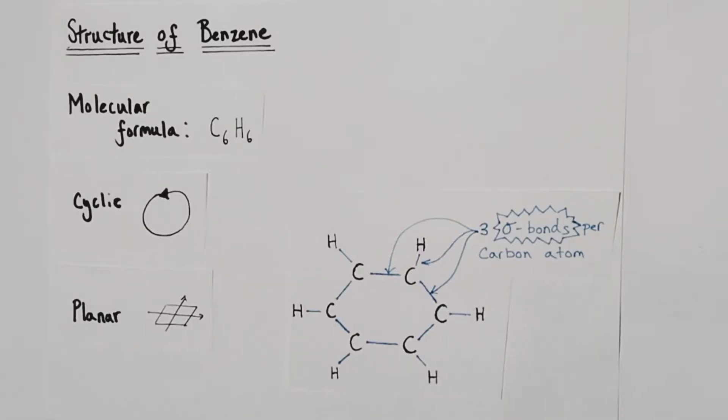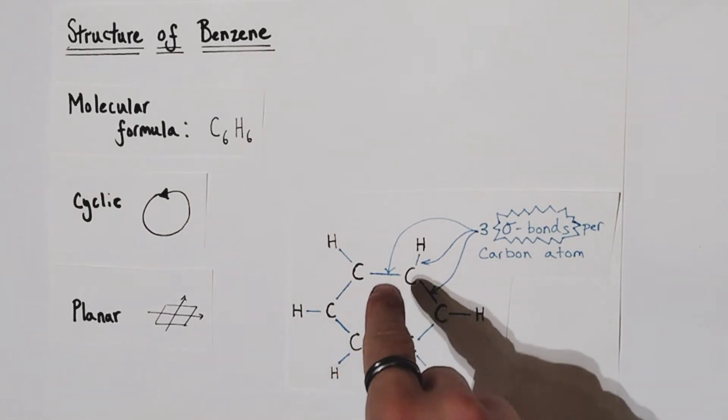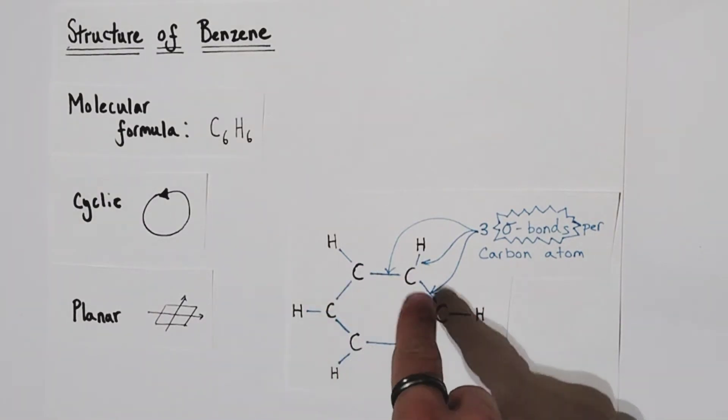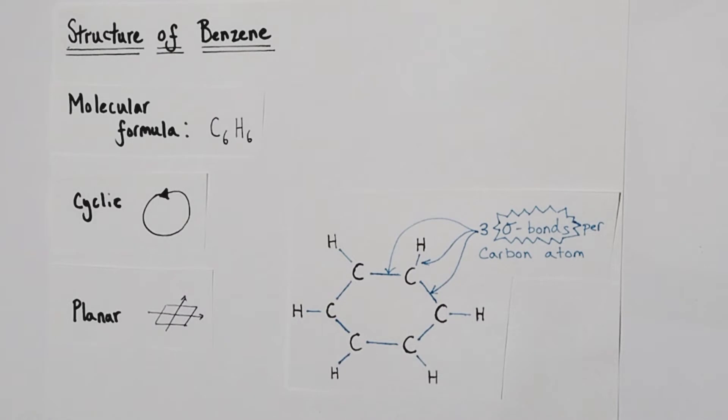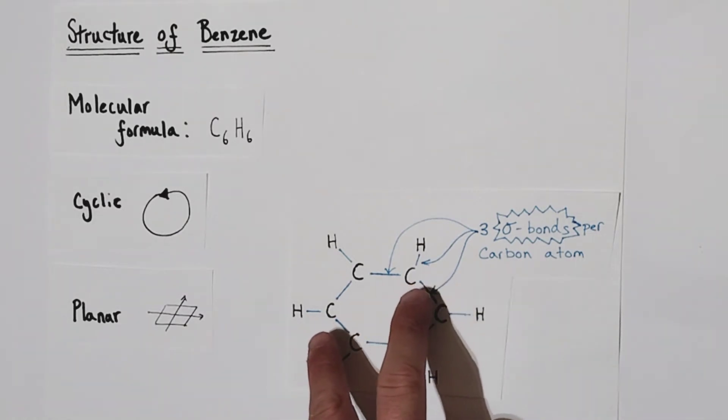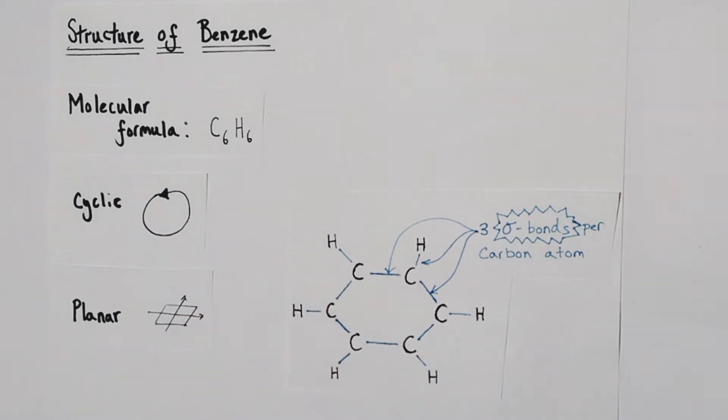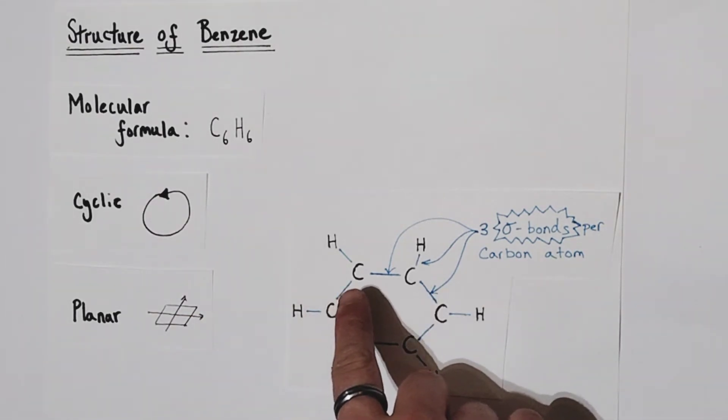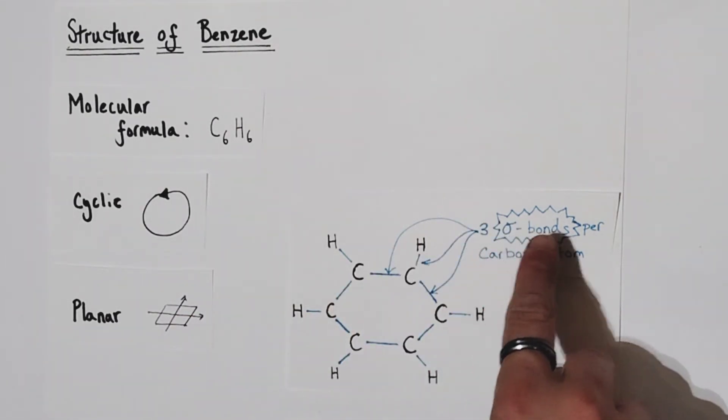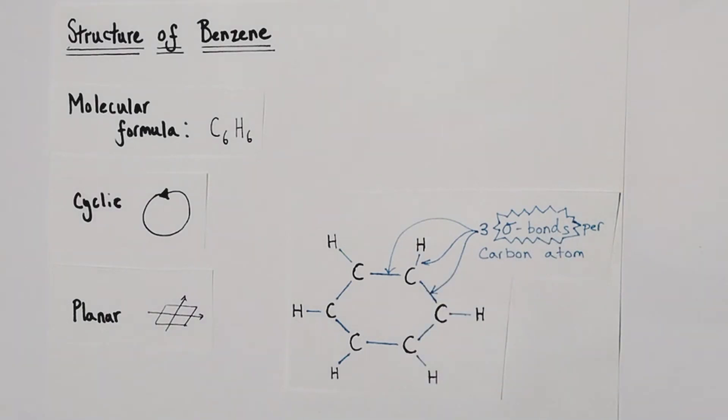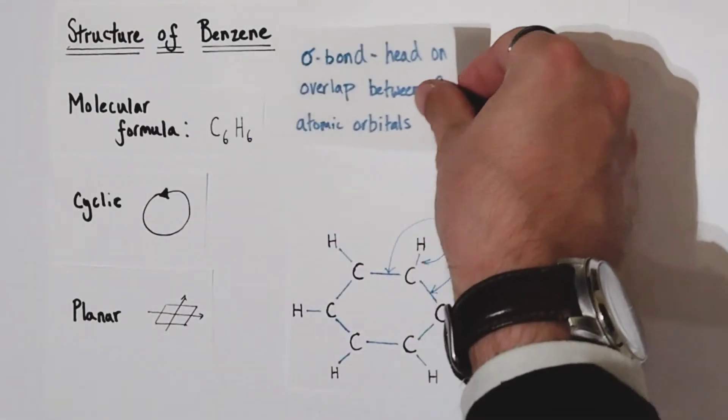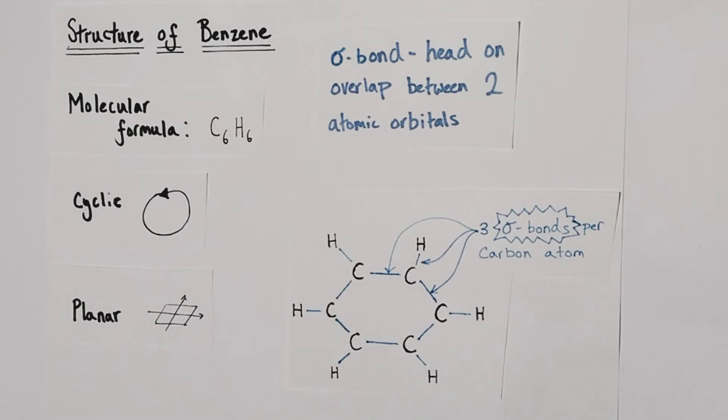The benzene structure is a hexagonal ring of six covalently bonded carbon atoms. Each individual carbon atom has formed two sigma bonds to two adjacent carbon atoms and one sigma bond to an adjacent hydrogen atom. That means that each carbon atom has therefore formed three sigma bonds per carbon atom. And if you've forgotten what a sigma bond is, a sigma bond is the head-on overlap between two atomic orbitals to form a single covalent bond.